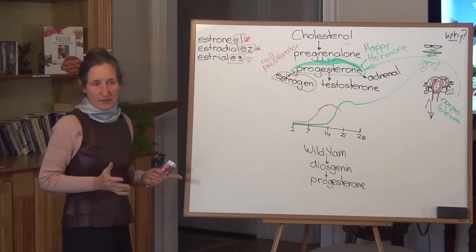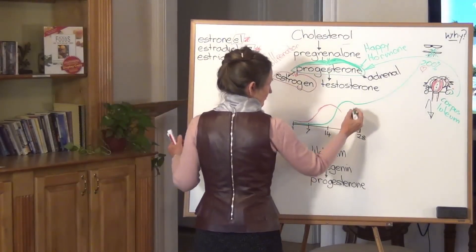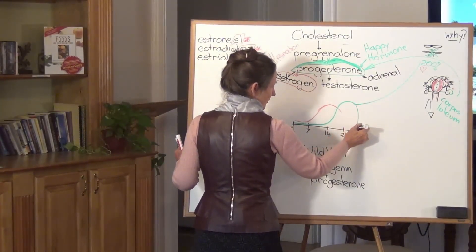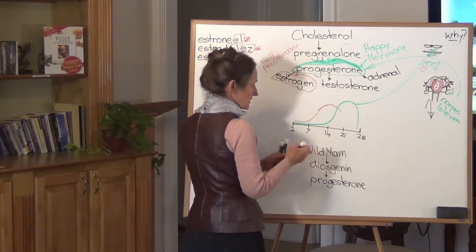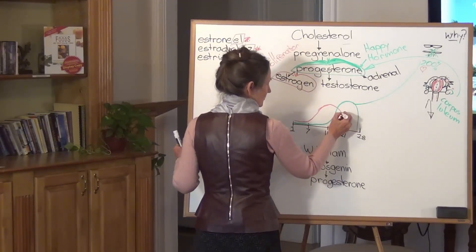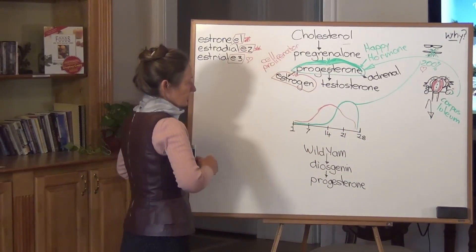But if there was no conception, by day 26, progesterone is given the message to go backstage, to drop down. And by day 26, estrogen is also given the message to drop. Now when both of those levels drop,